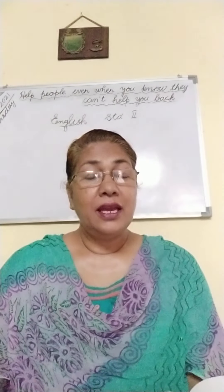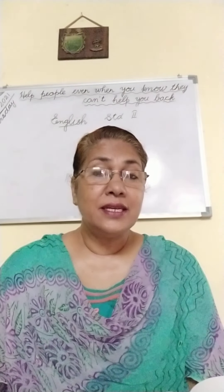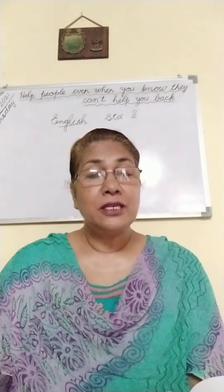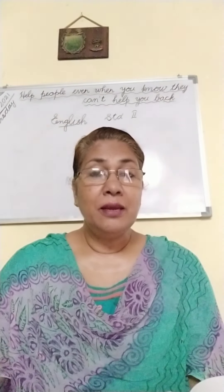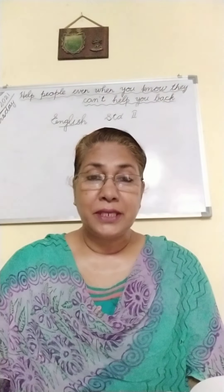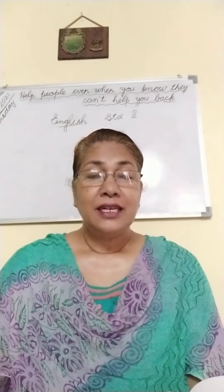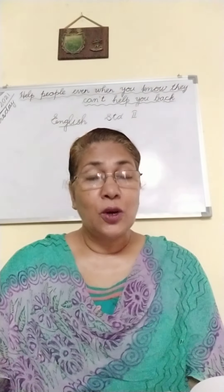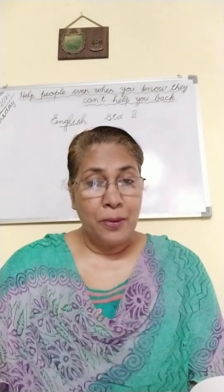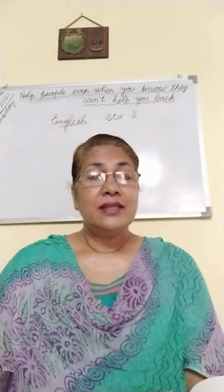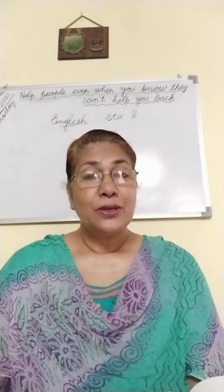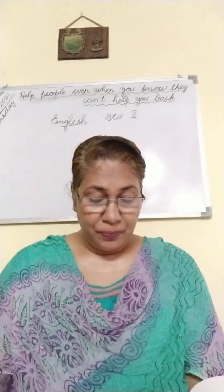Aunt Polly — A-U-N-T is Aunt. And when you write Polly, because it is a proper noun, you use a capital letter. Even for Tom, you have to write a capital letter because it is a proper noun. Then at the end of the sentence, you need to put a full stop.